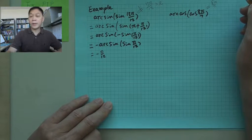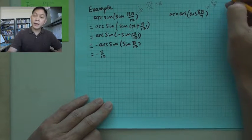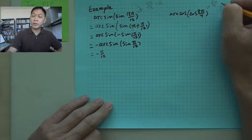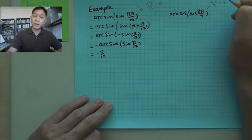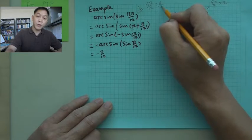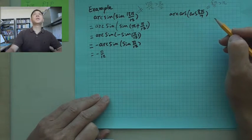The reason is output of arccosine has to be from 0 to pi. And here, it's out of the range, because this one is greater than pi.